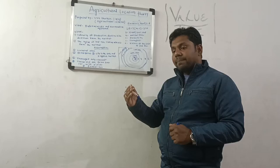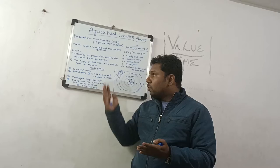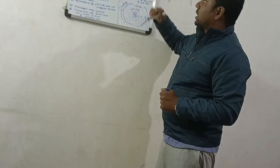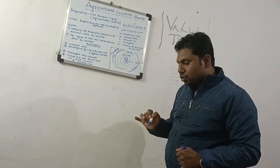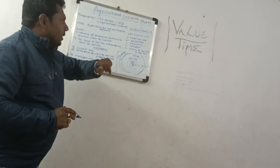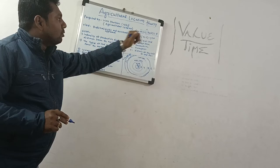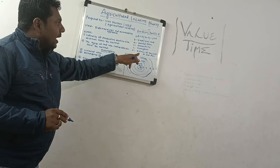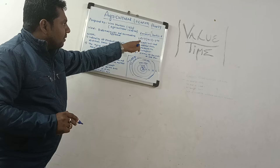Last assumption: economic man — all farmers are well-informed about agriculture and agricultural knowledge. After this we talk about the land rent formula: LR = Y(M - C) - Y·T·D, where Y is yield per unit of land, M is market price, C is production cost, T is transport cost, and D is distance from the market.